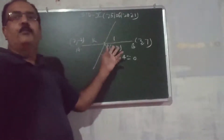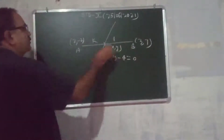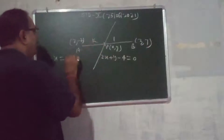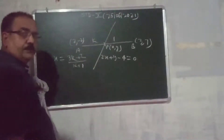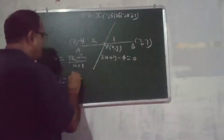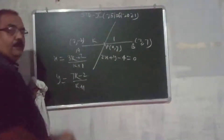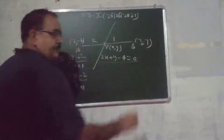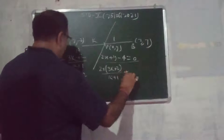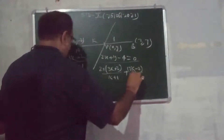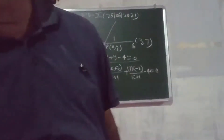I have taken ratio K:1. The x-coordinate will be: K×3 + 1×2 all divided by K+1, which gives (3K + 2)/(K+1). Similarly, for the y-coordinate: K×7 + 1×(-2) divided by K+1, giving (7K - 2)/(K+1). Now we have the coordinate of P as (x, y). We put these values into the given equation: 2×(3K+2)/(K+1) + (7K-2)/(K+1) - 4 = 0. Now we solve this to get the value of K.